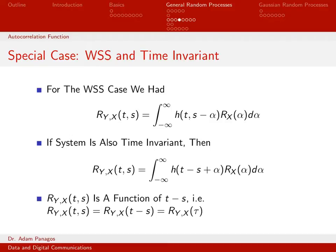In the previous video, we considered individually the special case of having a wide-sense stationary input random process and the case of having a time-invariant linear system. What we're going to do in this set of charts is consider these conditions jointly — the special case where we have a wide-sense stationary input random process and a time-invariant linear system.